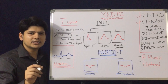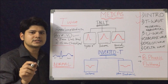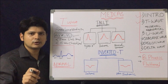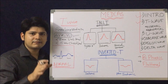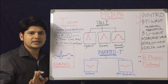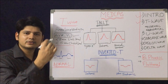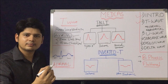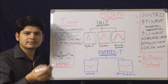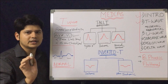To be more specific, a tall T wave is defined by the amplitude of the T wave being more than half of the preceding QRS complex. You calculate what the amplitude of the preceding QRS complex is — if the T wave occupies more than half of that amplitude, it is a tall T wave.